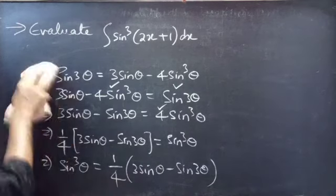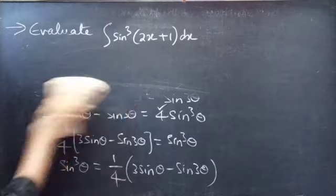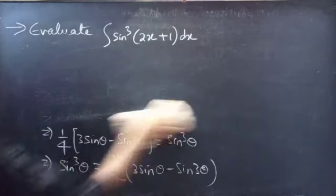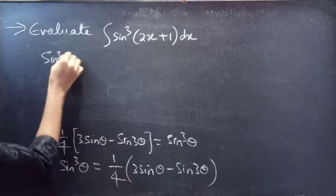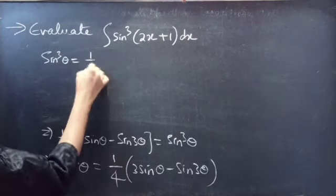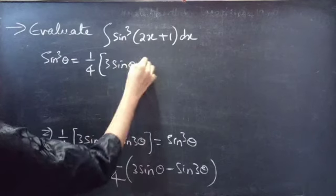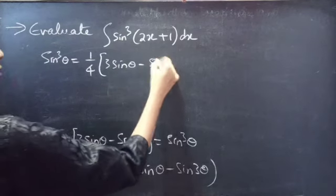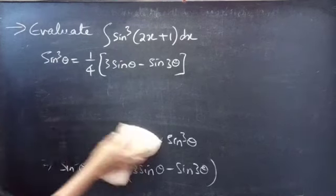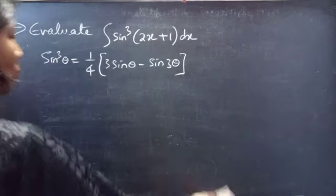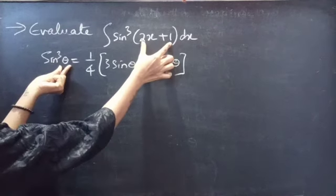So we have sin³θ equals 1/4 into (3 sin θ minus sin 3θ). Now let's replace θ by (2x+1). We will just replace θ by (2x+1) and compare this integrand with sin³θ.